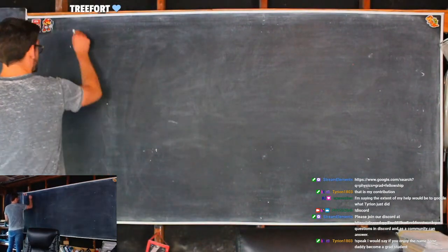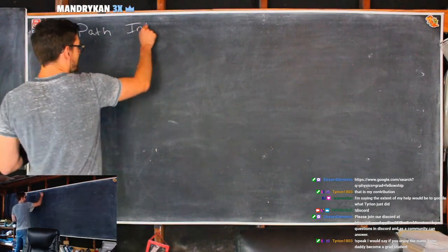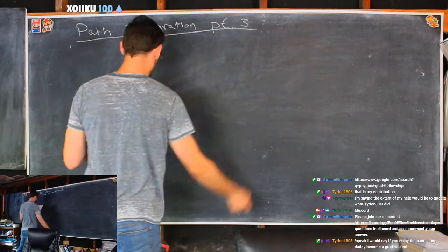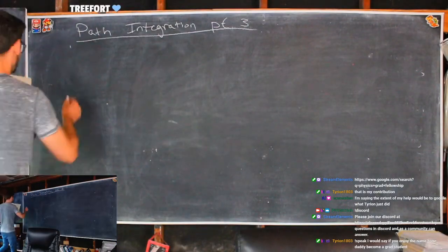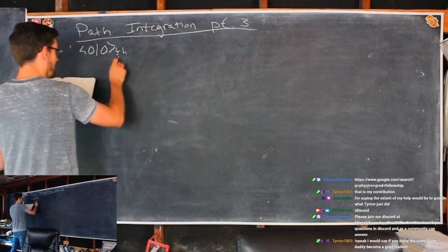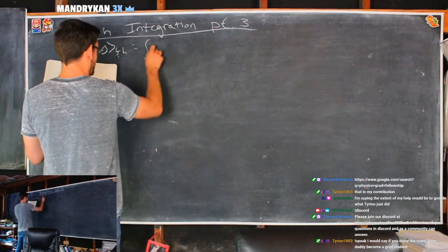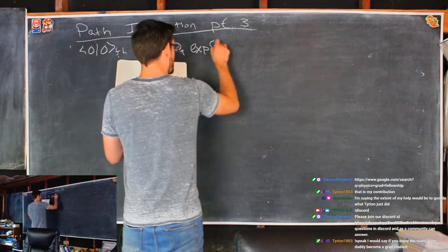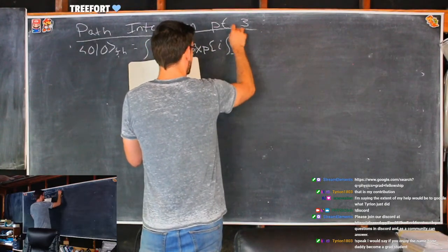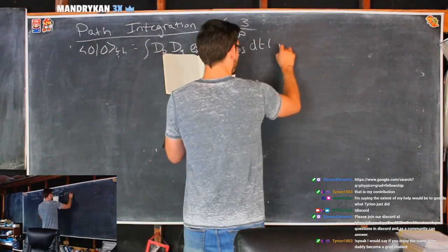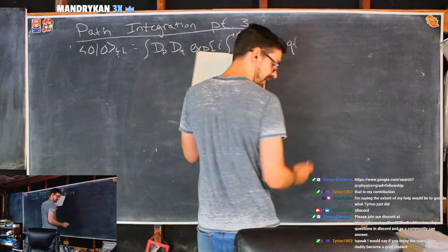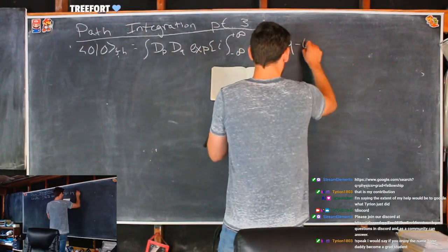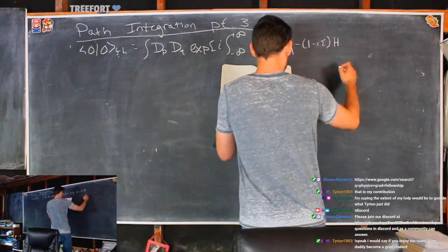This left us with our last expression from path integration part three. We had going from one ground state to the other, considering all paths in between — the integral over all paths, times the exponential, times i of the integral of what was the action: DT, P Q-dot, minus i-epsilon times the Hamiltonian.